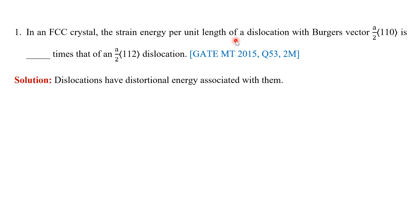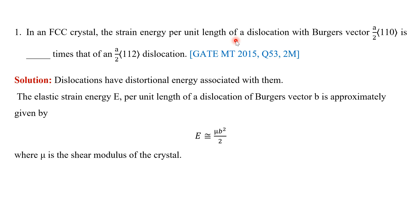Dislocations have some amount of distortion energy associated with them because compressive and tensile strains are always formed around dislocations. For example, compressive and tensile strains are formed around an edge dislocation, and shear strains are present around a screw dislocation. The magnitude of the elastic strain energy per unit length of a dislocation can be approximately given by the equation E ≈ μb²/2.